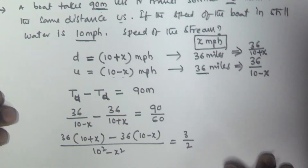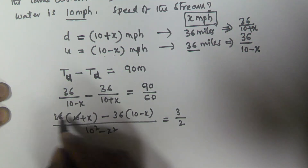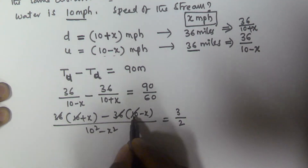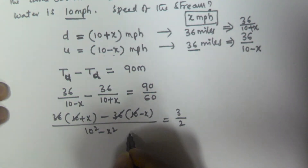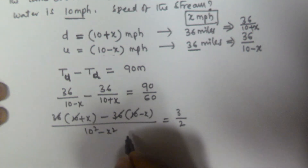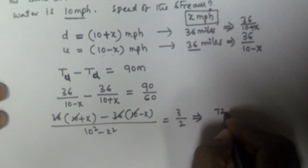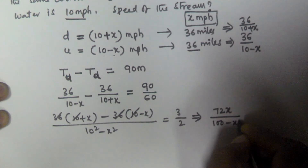...minus 36 times (10 minus x), divided by (10 squared minus x squared), is equal to 3/2. Here the 360 terms cancel out, leaving 36x plus 36x, which gives us 72x. So 72x divided by (100 minus x squared) equals 3/2.